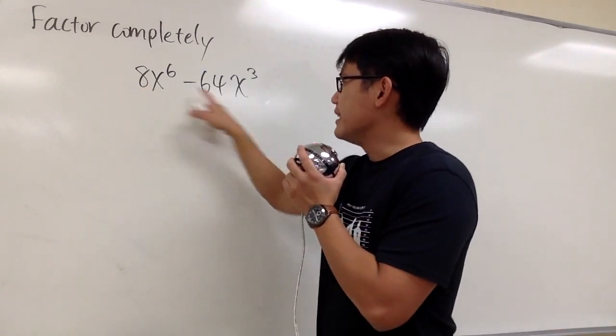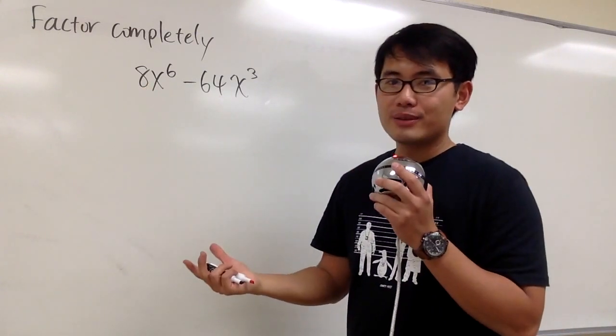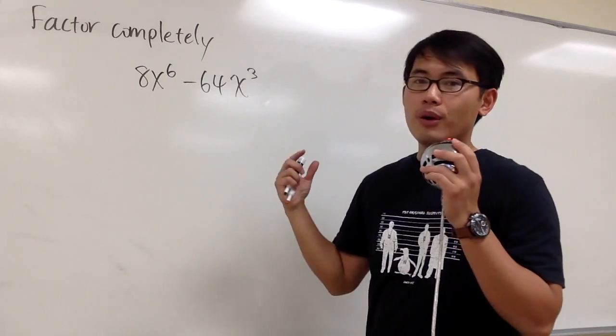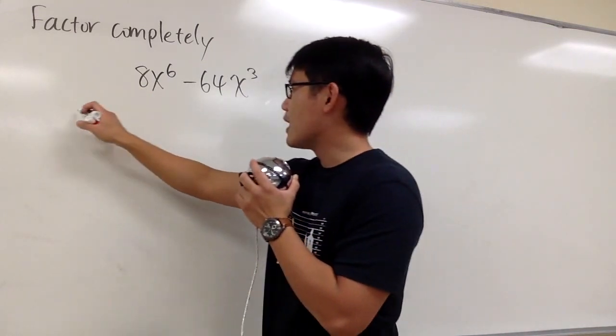So let's look at 8 and 64. What can we factor out? We know that 8 goes into 8, of course, and 8 goes into 64 also. So we can first factor out the 8.